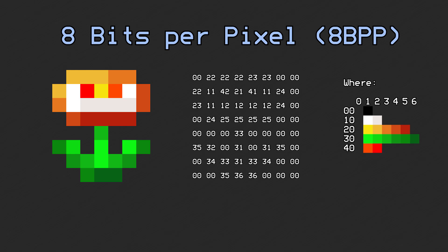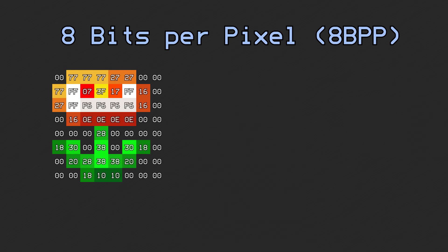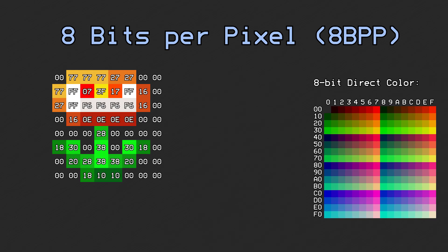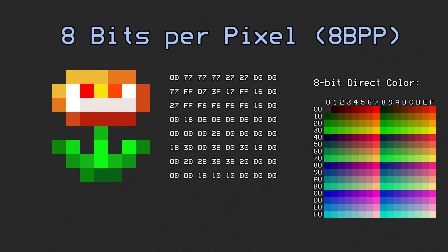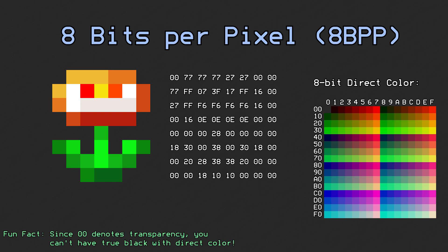8bpp graphics can also be stored in direct color format when a certain switch is set. The downfall to using direct color is that you're limited to an 8-bit or 11-bit color space instead of a 15-bit color space.